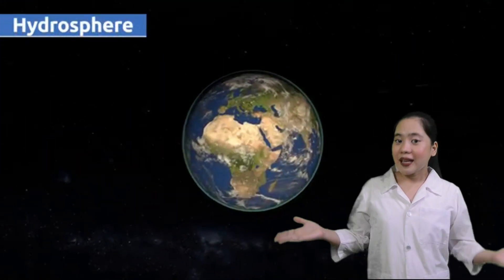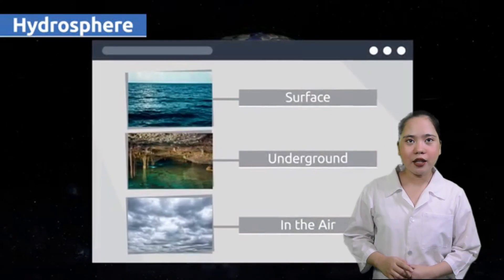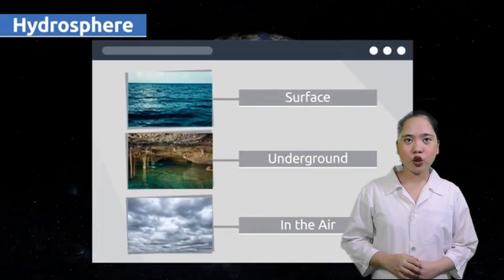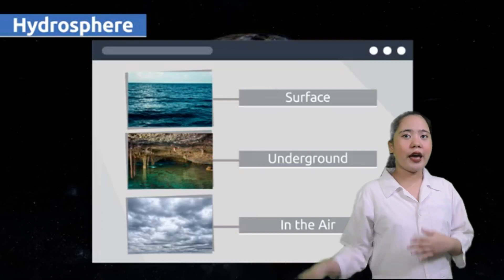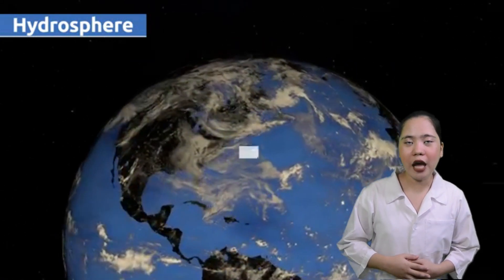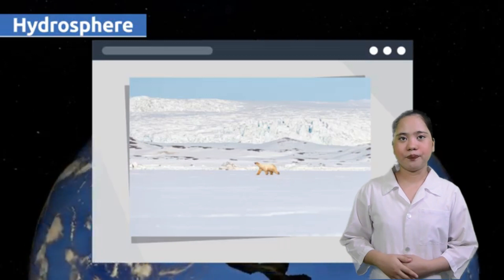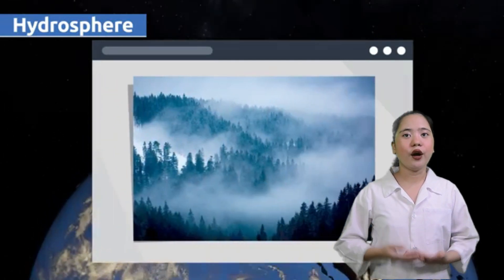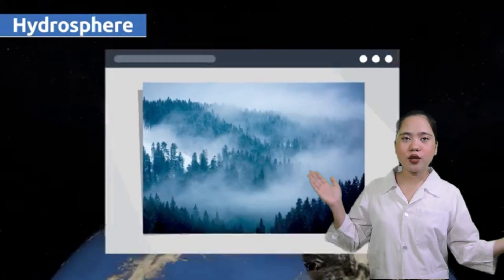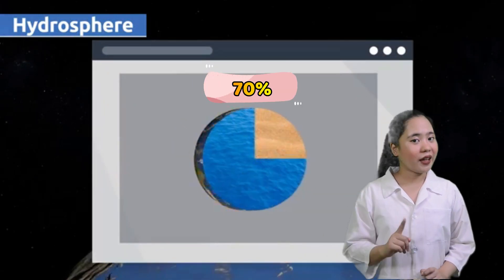Next is the hydrosphere. It is the combined mass of water found on, under, and above the surface of a planet, minor planet, or a satellite. Water covers 70% of the entire surface of Earth, and most of it is ocean water.